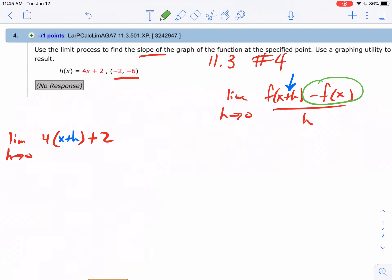Then the second part says subtract your function, so we do minus and a set of parentheses. We'll do 4x plus 2 here because that's our function, and divide by h.